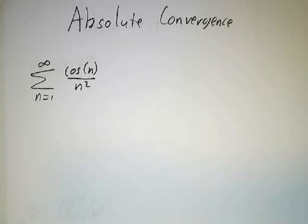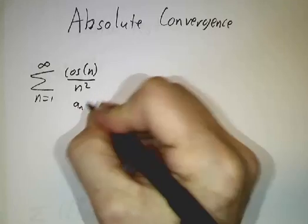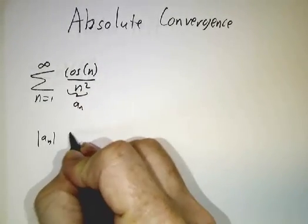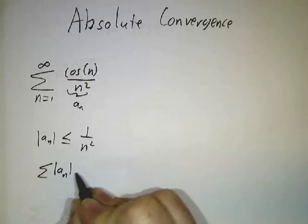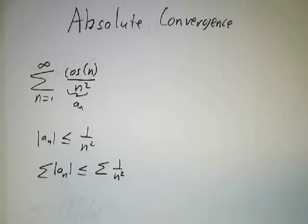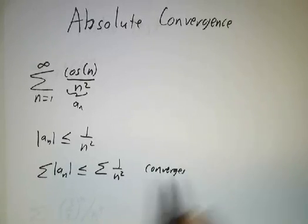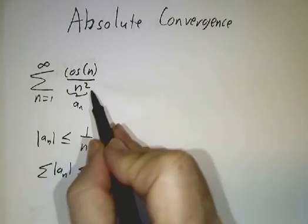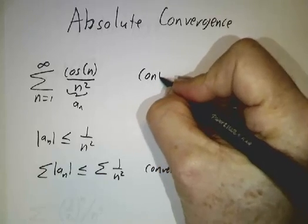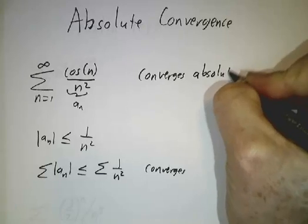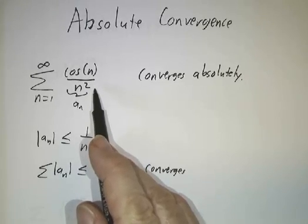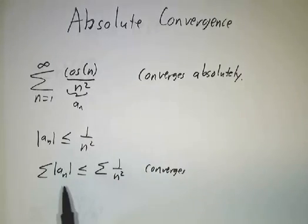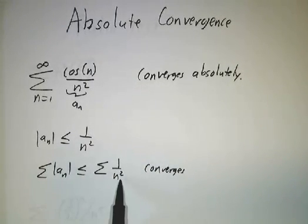Now let's look at absolute convergence. Here's another series where I have no idea what it adds up to. But if we call this a_n, we know that |a_n| is less than or equal to 1 over n squared. So the sum of the absolute values of a_n is less than or equal to the sum of 1 over n squared, and that converges. Since the sum of the absolute values converges, the original series converges — we say it converges absolutely. By taking absolute values, we can apply all the tricks for positive series, like comparison to a p-series.